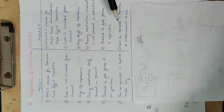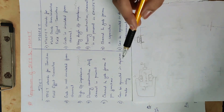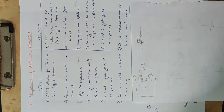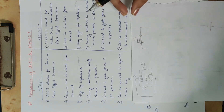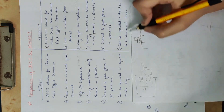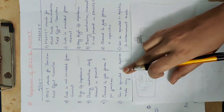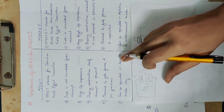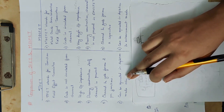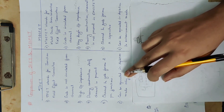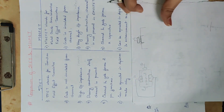There is Enhancement type MOSFET and Depletion type MOSFET. We can operate MOSFET in enhancement mode. JFET operates in depletion mode. In depletion mode MOSFET, the channel is already created during construction.